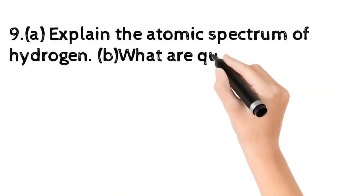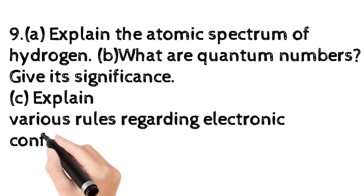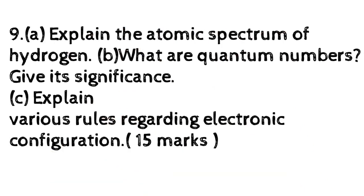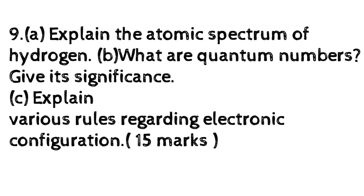Question 9: A) Explain the atomic spectrum of hydrogen. B) What are quantum numbers? Give its significance. C) Explain various rules regarding electronic configuration. 15 marks.